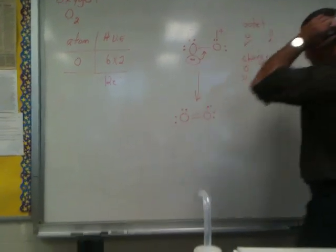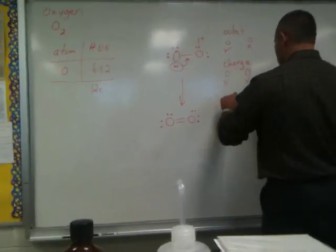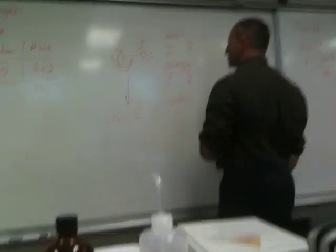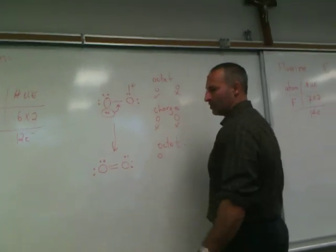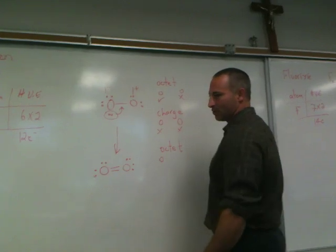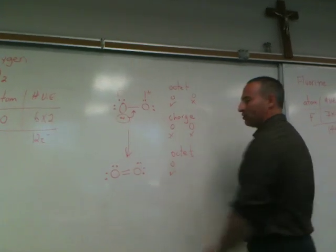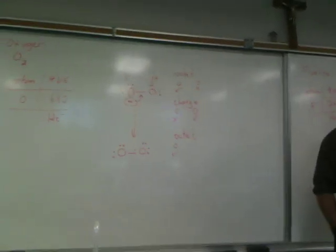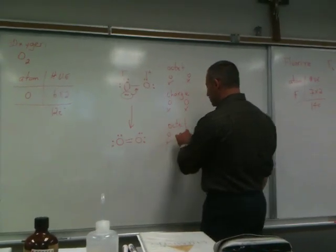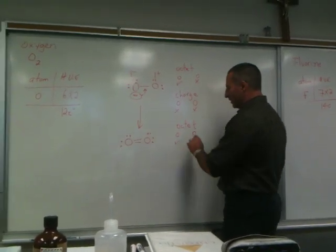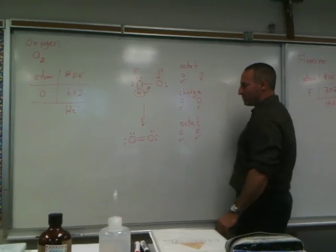Now let's check the octet rule for oxygen. We see that the left oxygen atom possesses two, four, six, eight. Remember, bonding pairs still count for two. So the left oxygen atom is satisfied with its number of electrons. The right oxygen atom, same thing, it possesses eight.